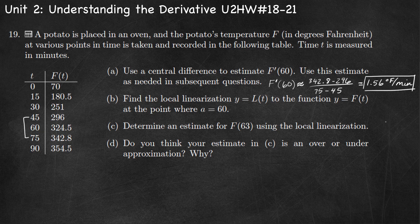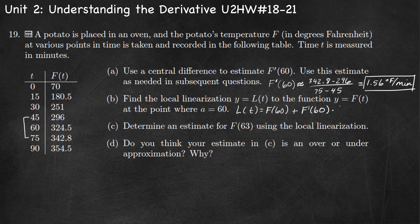Part B: find the local linearization y equals L of t at a equals 60. We're looking for the equation of the tangent line at t equals 60. L of t equals f of 60 plus f prime of 60 times (t minus 60). From the table, f of 60 equals 324.5, and f prime of 60 we estimated as 1.56. So L of t equals 324.5 plus 1.56 times (t minus 60).